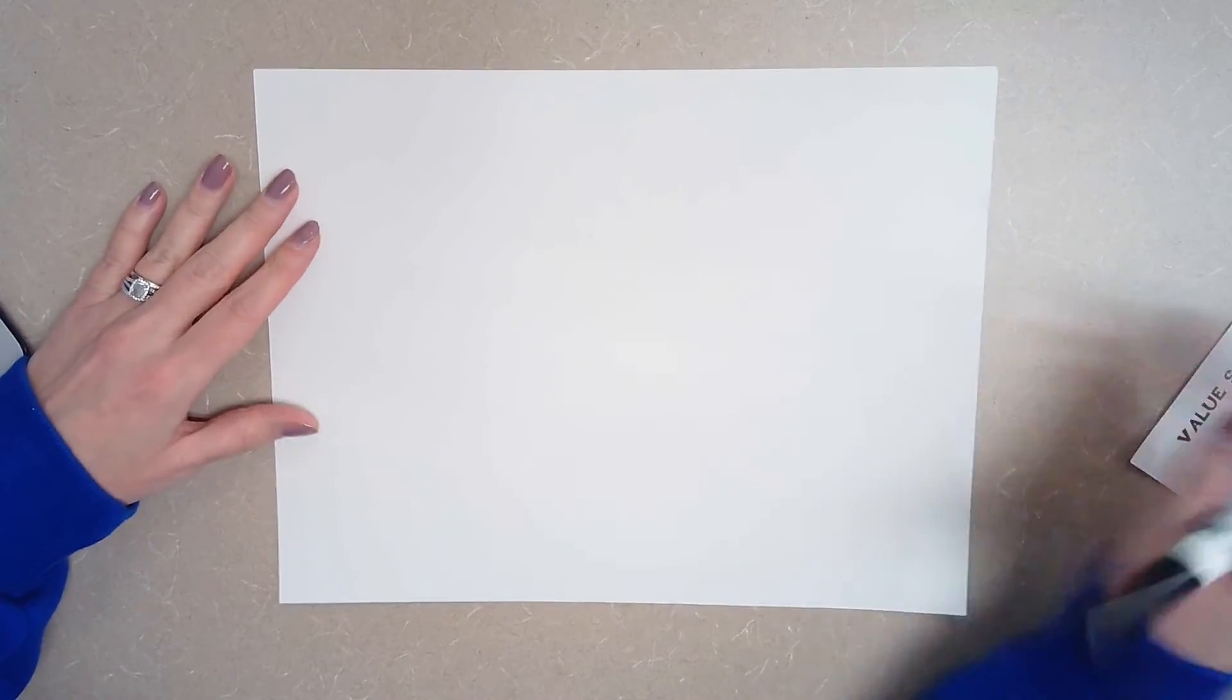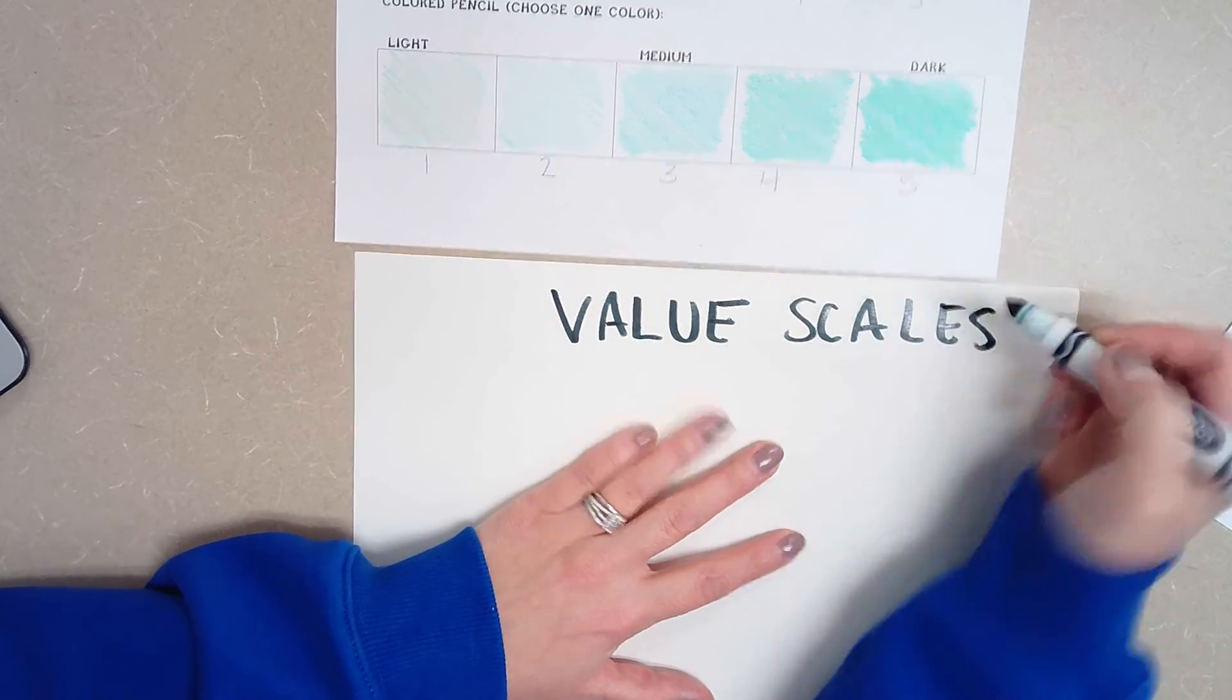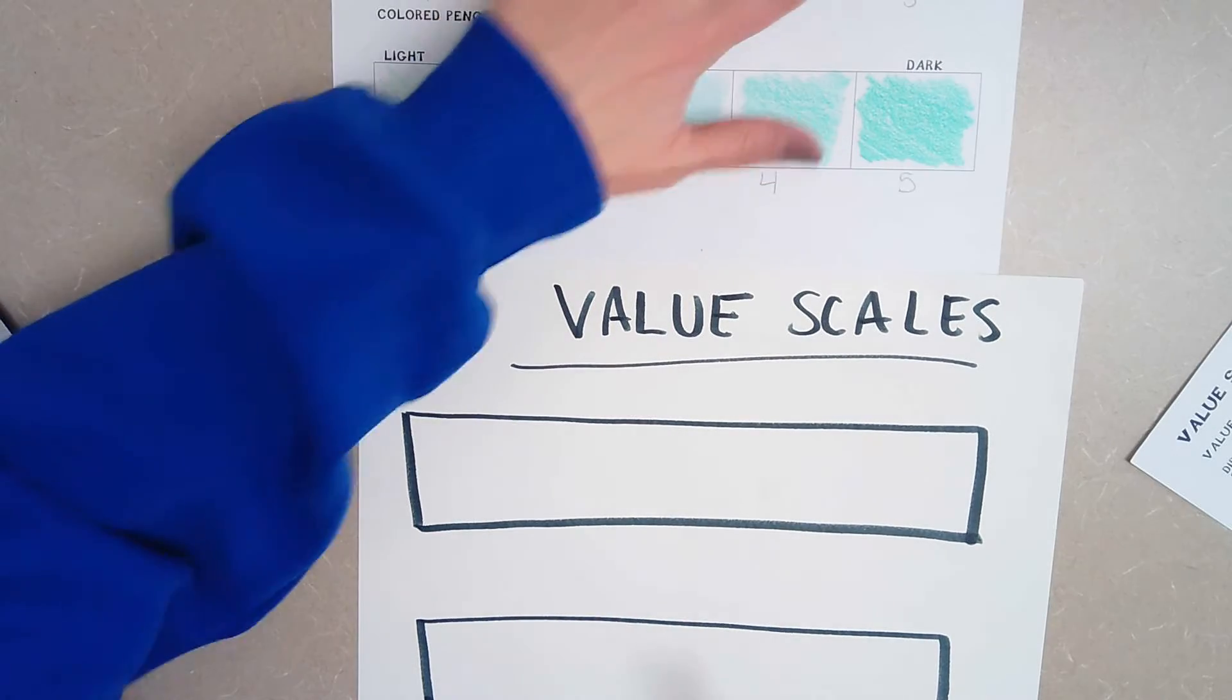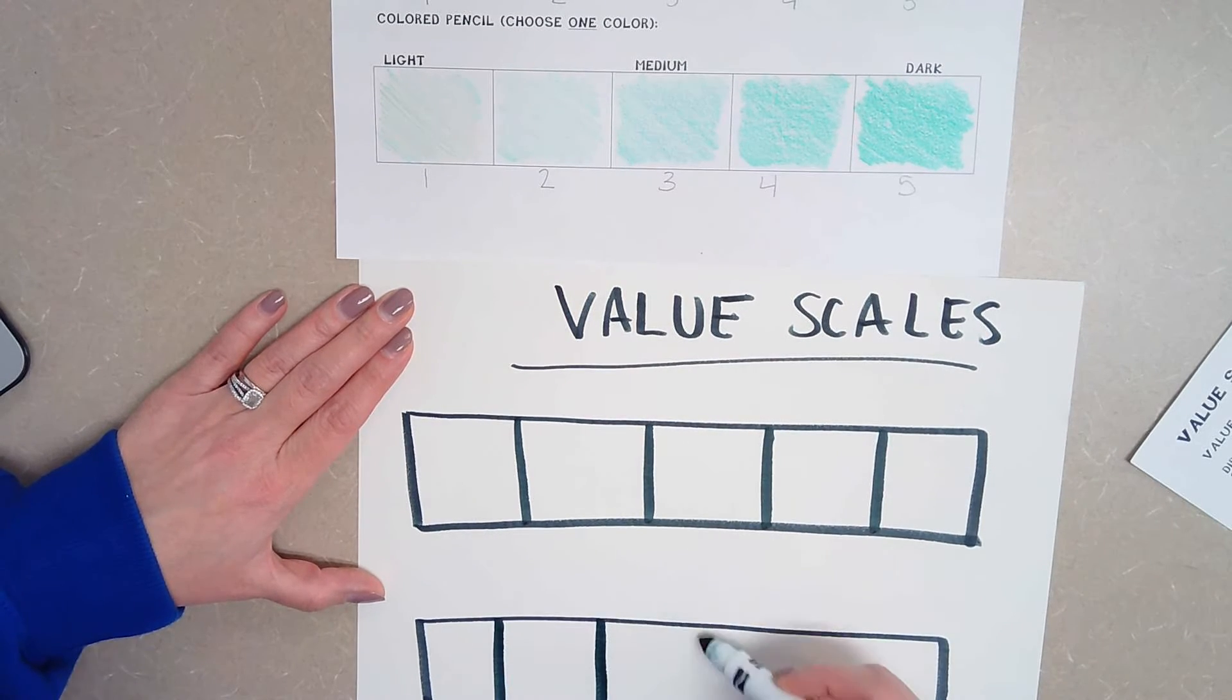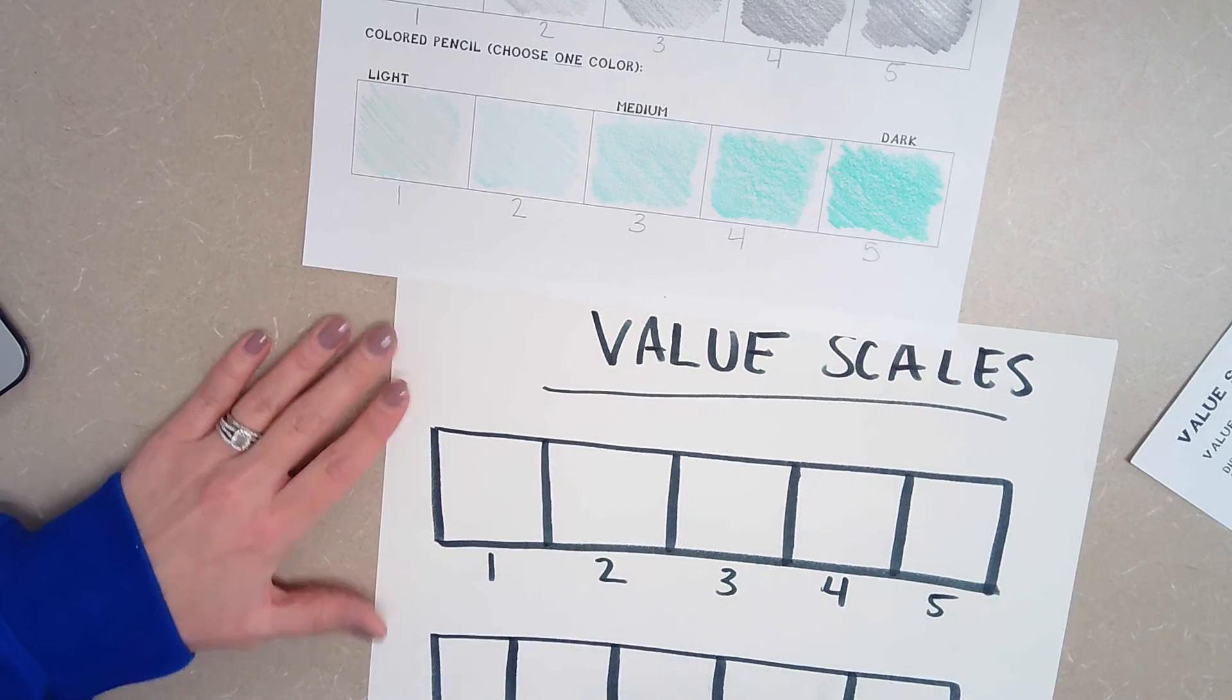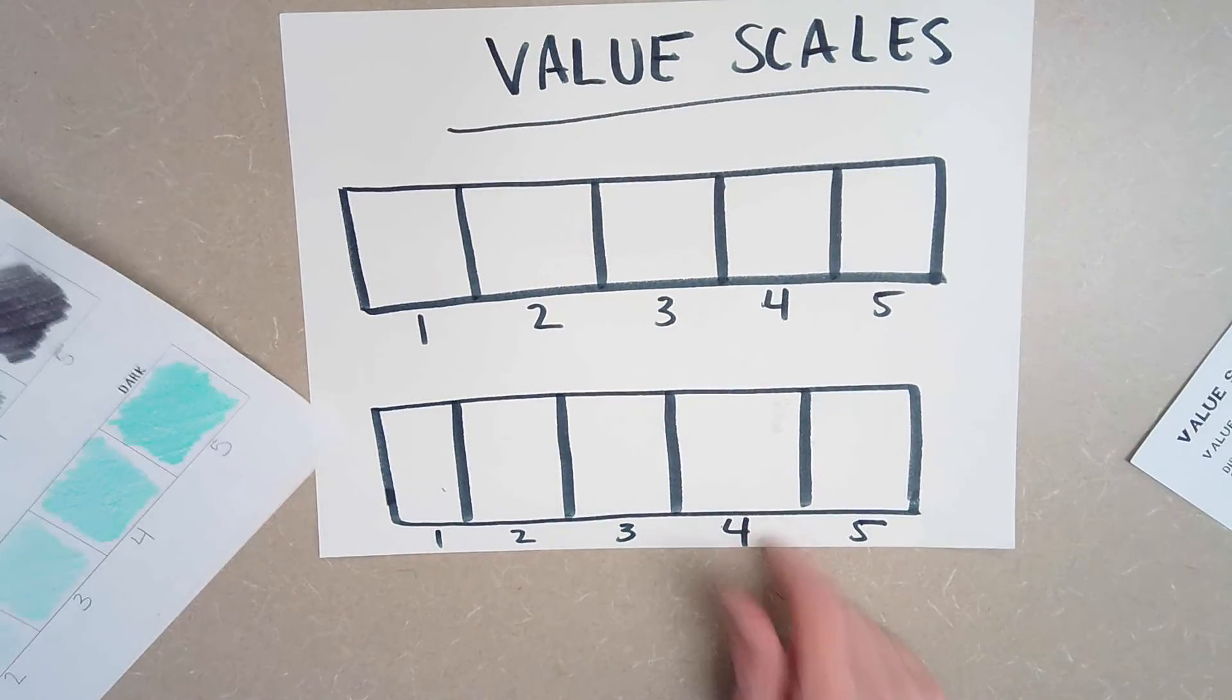So if you are an at-home learner and you did not receive this worksheet, we are just going to use a regular piece of paper and a marker. I'm going to write value scales up here at the top, and then I'm going to draw two rectangles. Just like that. And then I need four lines. So one, two, three, four. One, two, three, four. And then I'm going to label them. There we go. And then you can do your pencil here and your colored pencil down there. So you can still do this exercise even without having the worksheet. You can create your own worksheet just using a black marker and a piece of paper.